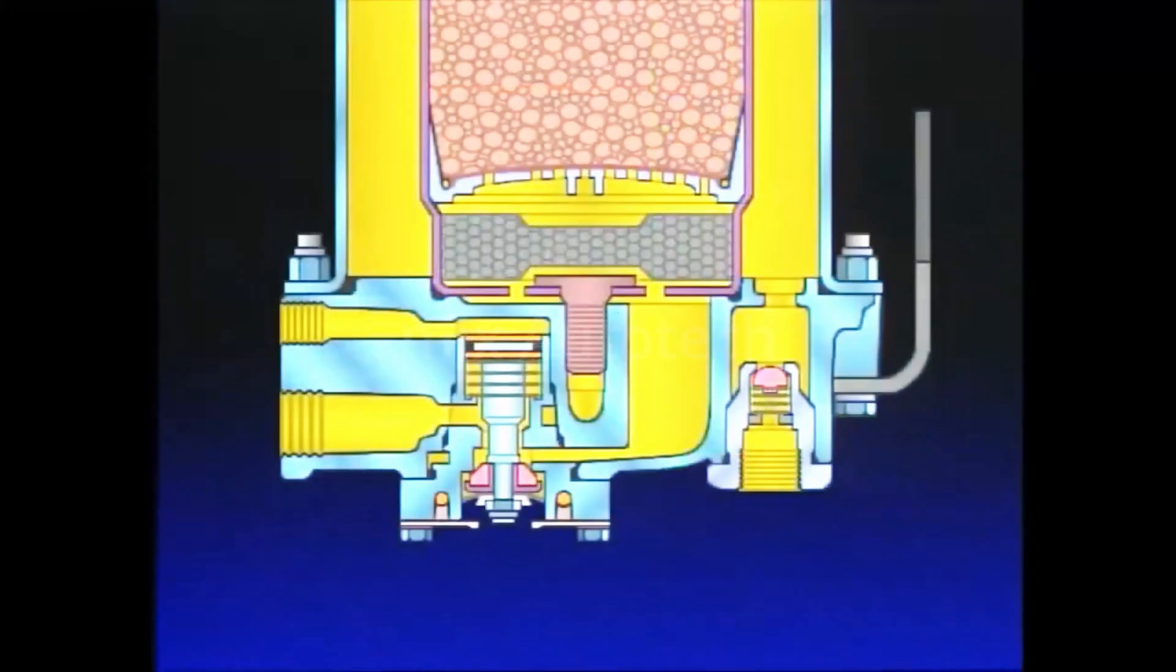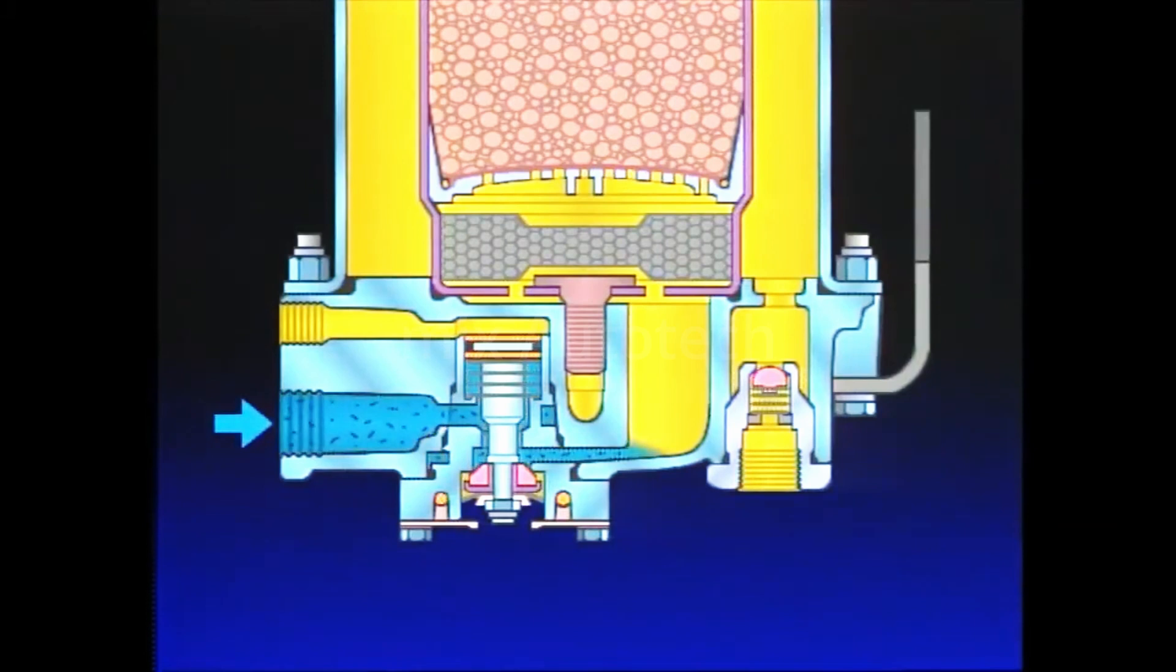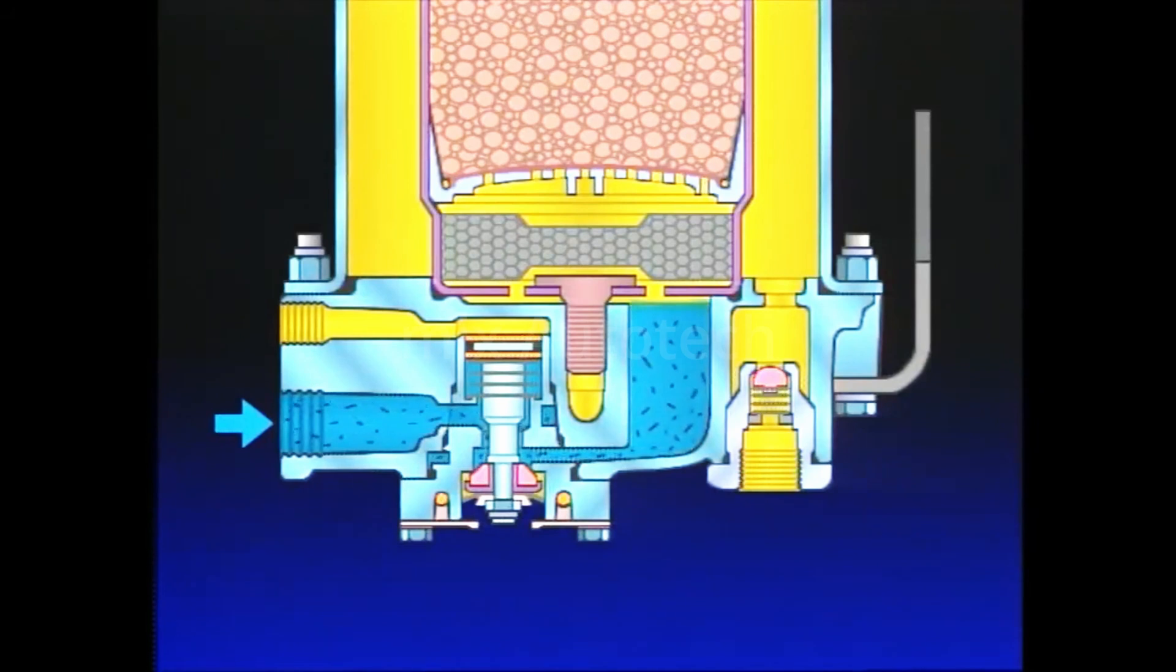Air and contaminants from the compressor enter the air dryer supply port in the end cover. Air traveling through the end cover cools, causing some contaminants to condense and drop to the sump of the end cover.